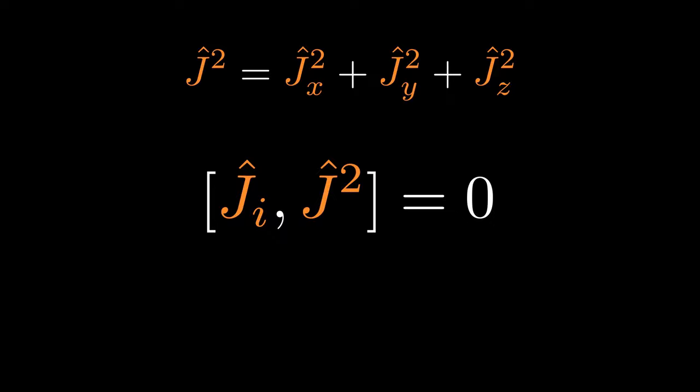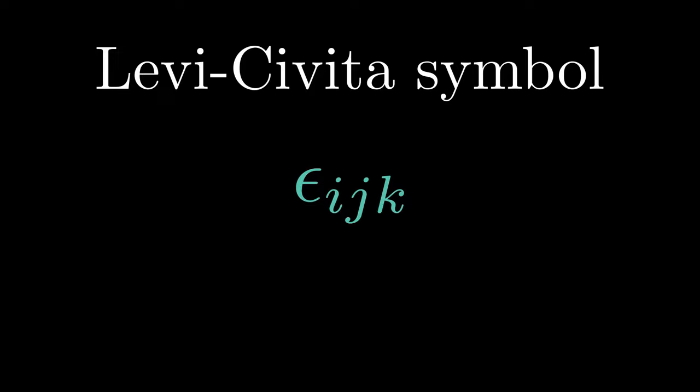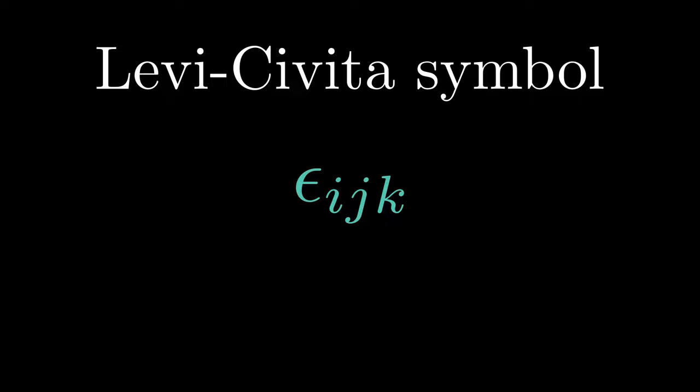The commutator of Ji and Jj equals i summed over k εijk Jk, where each of the i, j, and k can be x, y, or z. The epsilon is called a Levi-Civita symbol. It is a simple object, and it is here to exploit the cyclic symmetry of the relationships between angular momentum operators. Epsilon is +1 for even permutations of x, y, z. Epsilon is -1 for odd permutations of x, y, and z. Epsilon is 0 if any of the two indices are the same.